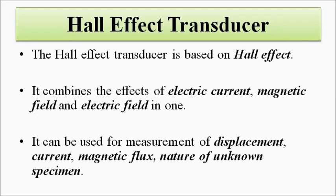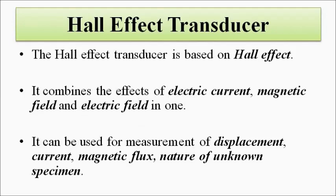The Hall Effect involves electric current, magnetic field, and electric field, and there are certain principles associated with it which constitute the Hall Effect and how it can be used for sensing and transduction. This Hall Effect transducer can be used for measurement of linear displacement, current flow, the magnitude of current flowing through a specimen, the magnetic field or magnetic flux, and the nature of the unknown specimen — specifically to determine the type of semiconductor, whether it is a P-type or N-type semiconductor.